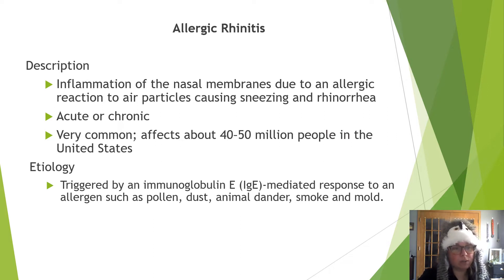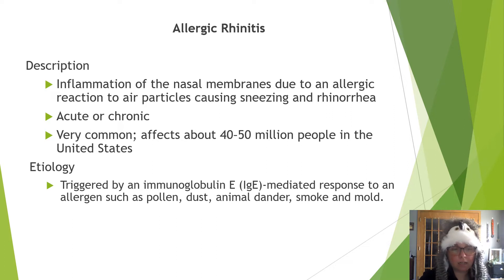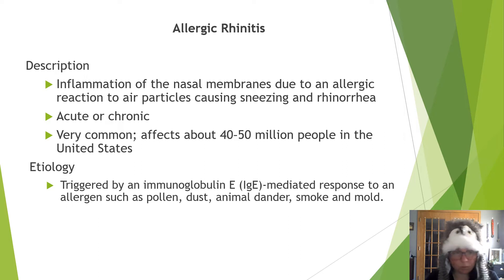Our first disease is allergic rhinitis. We're going to start in the nasal region. This is inflammation of the nasal membranes due to an allergic reaction to air particles causing sneezing and rhinorrhea. It can be acute or chronic. It is a very common disorder and affects about 40 to 50 million people in the United States. Etiology could be triggered by IgE, an immunoglobulin that's part of your immune response, to an allergen such as pollen, dust, animal dander, smoke, mold — really anything you're allergic to.